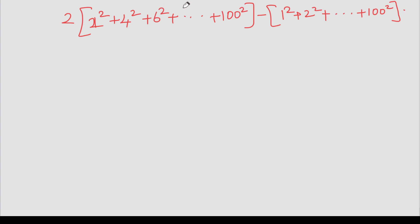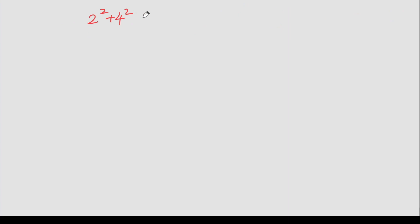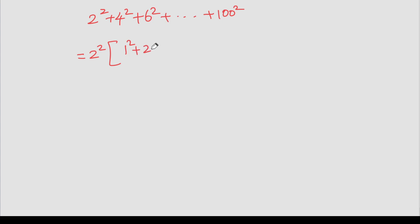How do we solve the first series? 2 into: 2 square, 4 square, 6 square, up to 100 square. So let's go to the next page. So: 2 square, 4 square, 6 square, up to 100 square — how do we solve this? Now we have 2 squared out, so the remaining numbers are 1 square, 2 square, 3 square, up to 50 square.